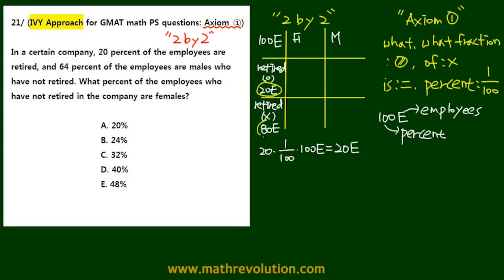Now, it says 64% of the employees are male, have not retired. So 64%, 64 times 1 over 100 of the total, so 100E equals 64E. Now, these are males, male employees who have not retired. We can cross out 100, and we get 64E. So now we know that this area right here is 64E, and this gives us the value for this area as well, which is 16E, because 16 plus 64 is 80.